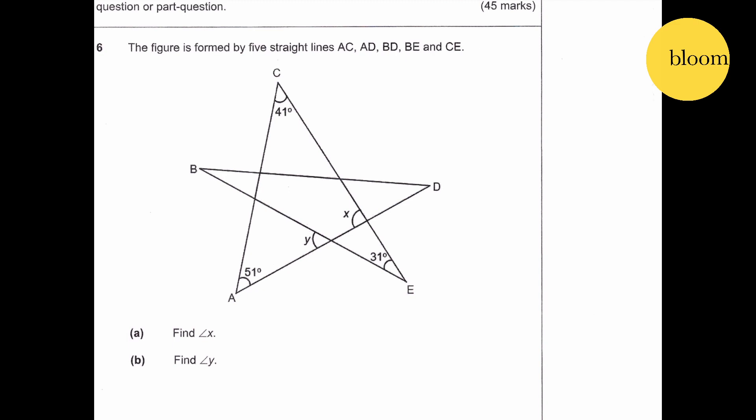Question 6. The figure is formed by five straight lines: AC, AD, BD, BE, and CE. Find angle X.